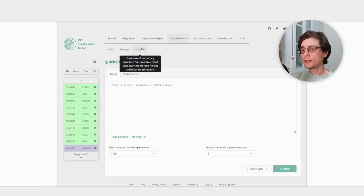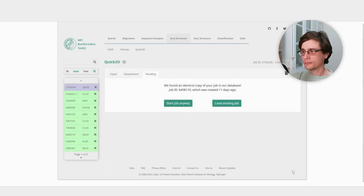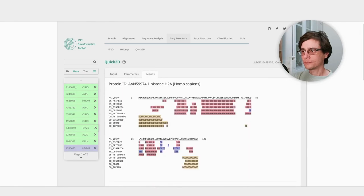Rather than creating a multiple sequence alignment ourselves, we can delegate this task to Quick2D, which will search for similar sequences, use them to build multiple sequence alignment, and forward it to the different programs that predict secondary structure. The results show the predicted secondary structure at each residue in the original query sequence.